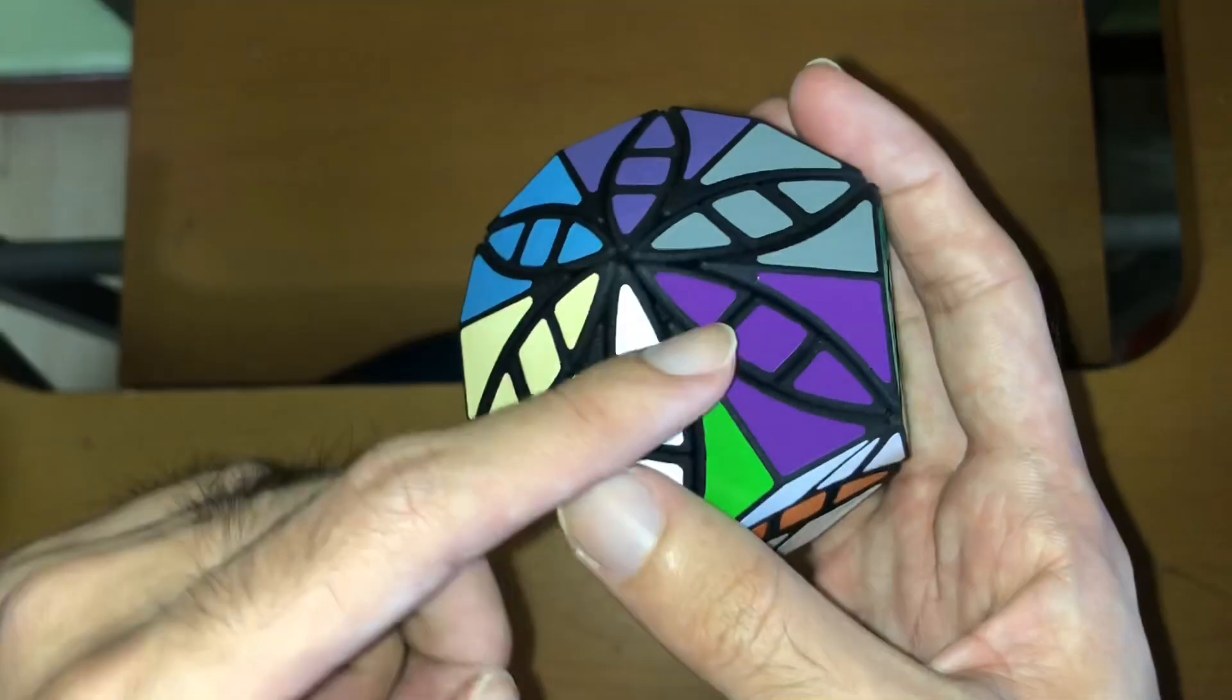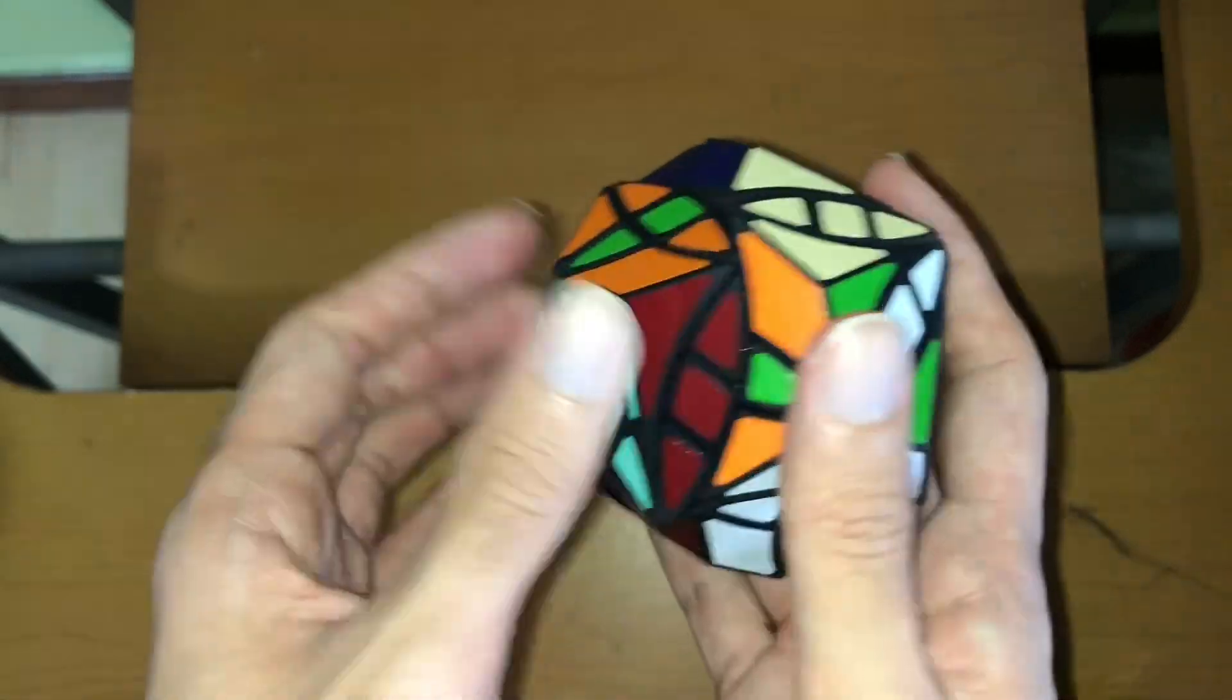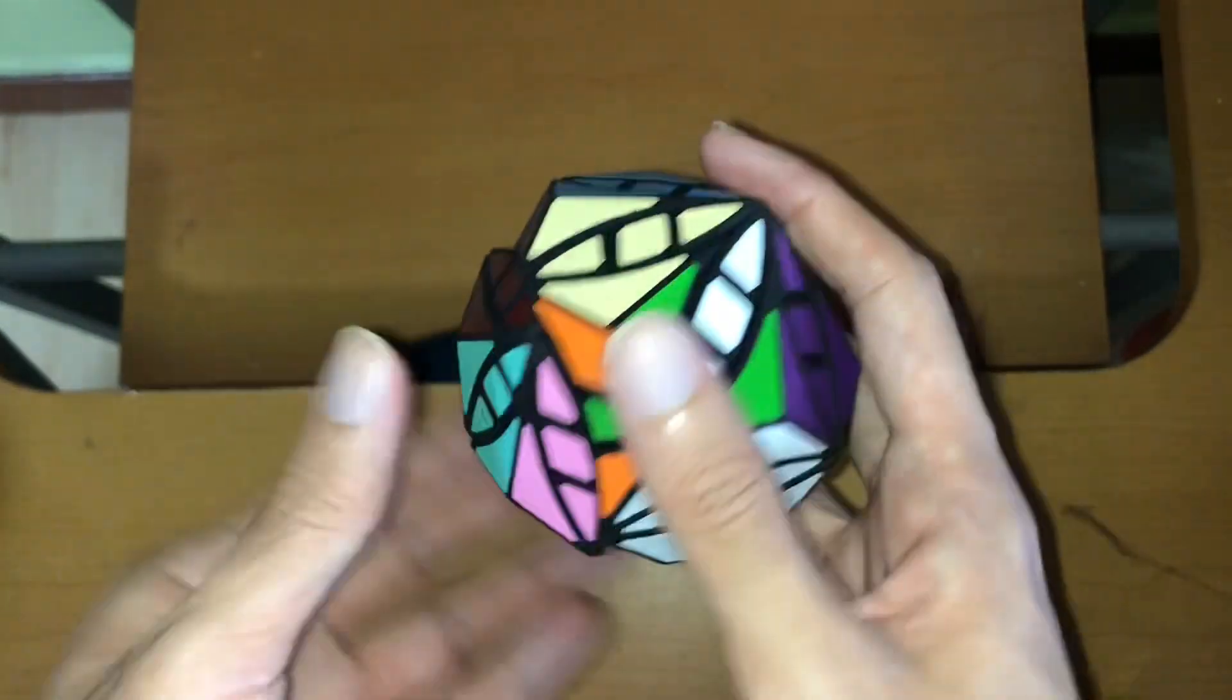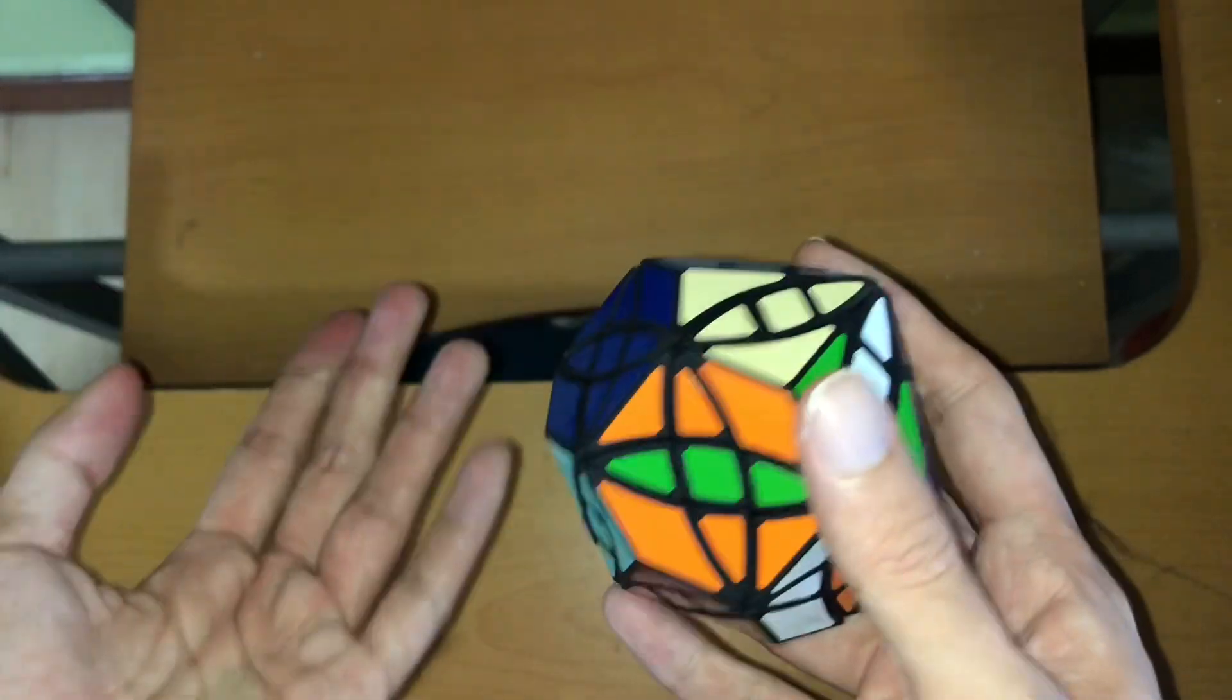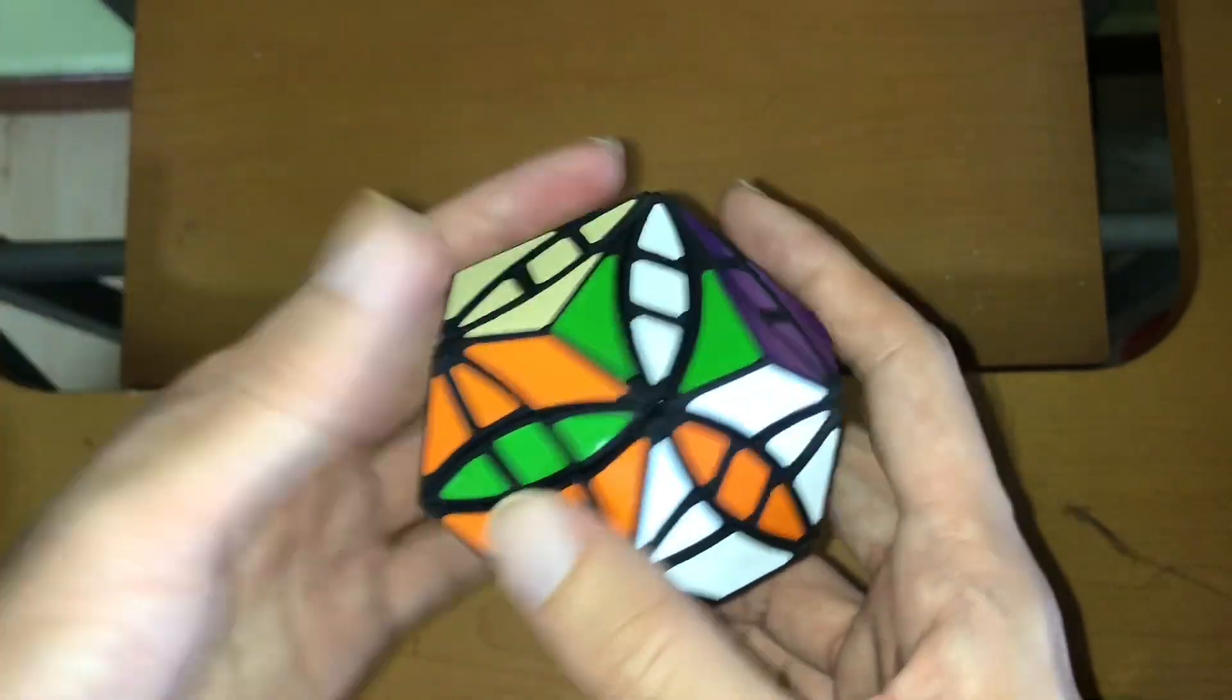And only when you restore the centers can moves on the other cube be made available, like this. So combining these moves, you can scramble the pieces on the puzzle.